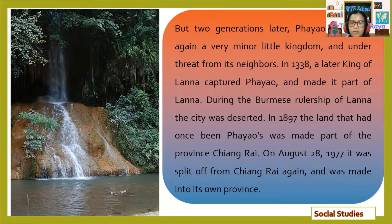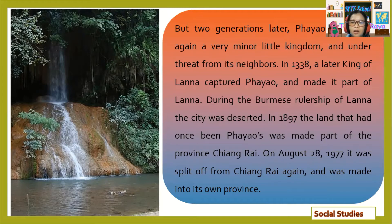But two generations later, Phayao was once again a very minor kingdom and under threat from its neighbors. In the year 1338, a later king of Lanna captured Phayao and made it part of Lanna. During the Burmese rulership of Lanna, the city was deserted. In 1897, the land that had once been Phayao was made part of the province of Chiang Rai. On August 28th, 1977, it was split off from Chiang Rai again and made into its own province.